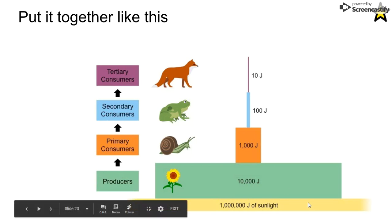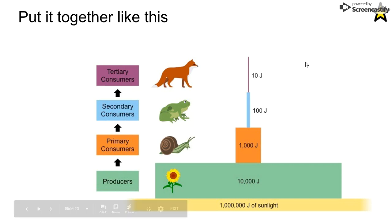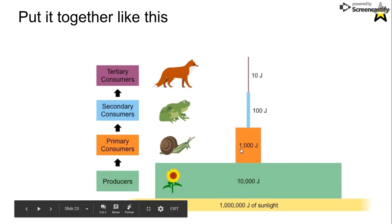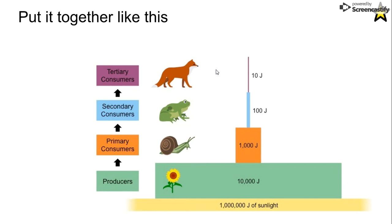The energy decays so fast that the food chain will end, because each level is pooping out 90% of its energy. Plants start by losing 99%, then 90%, 90%, 90% is pooped out at every subsequent level — so food chains extinguish themselves very quickly.